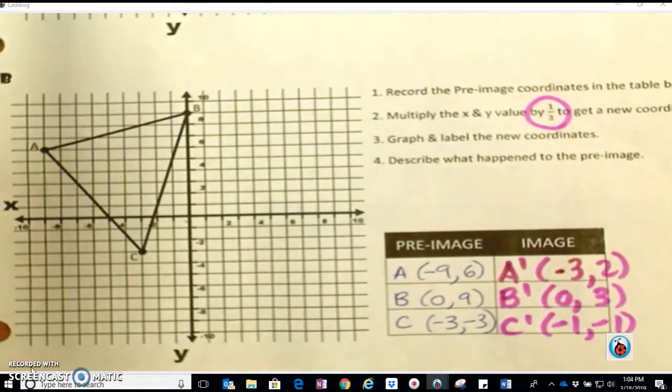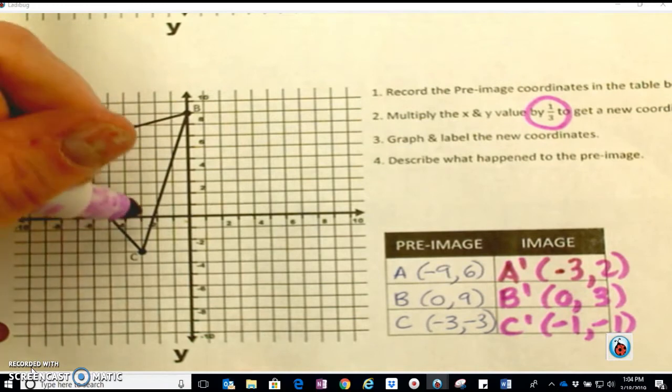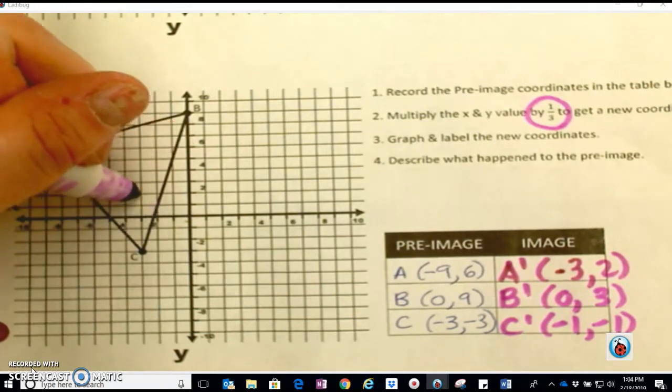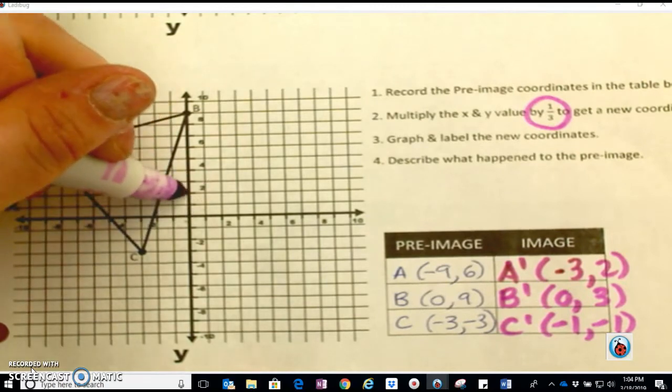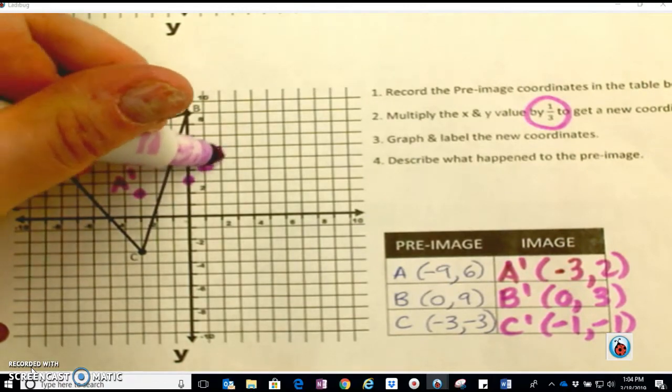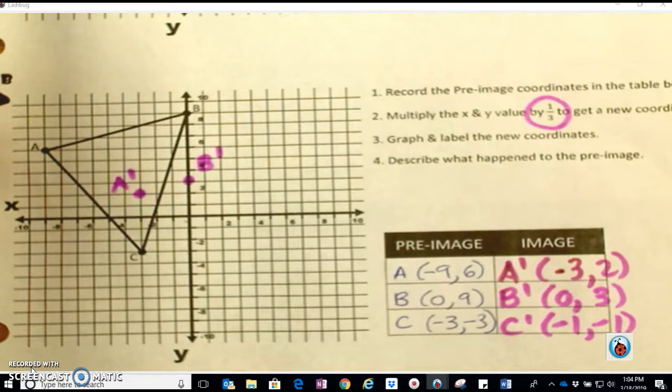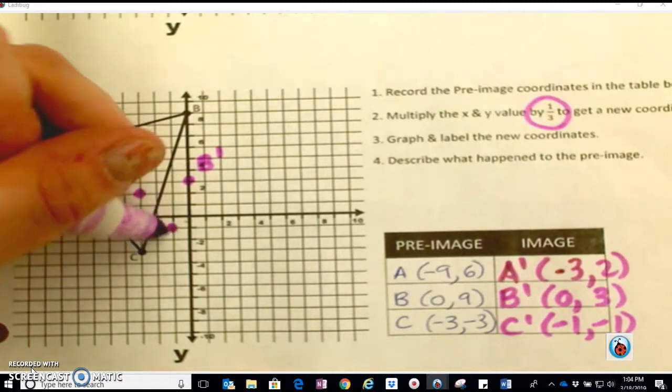I'm going to go ahead and graph those and see what happens. Negative 3, 2. There is A prime. 0, 3, there is B prime. And C prime is negative 1, 1.